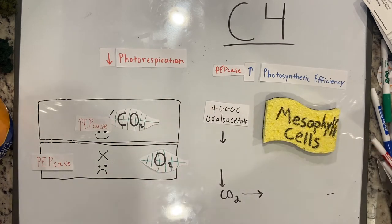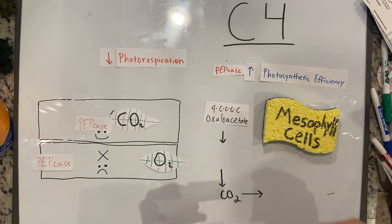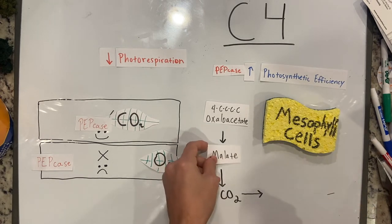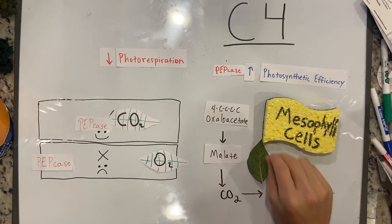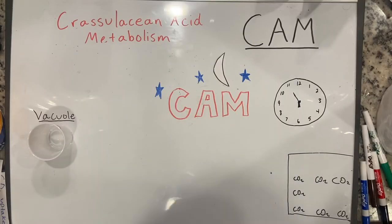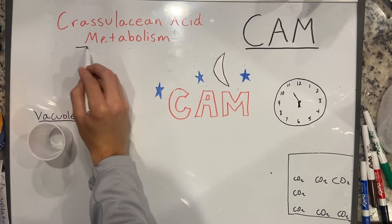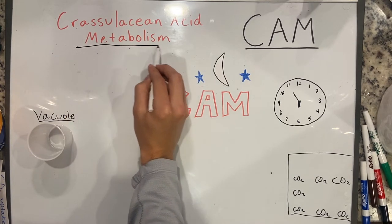Once the oxaloacetate is produced, it is then converted to malate and moved into the bundle sheath cells to be broken down into CO2 to undergo the Calvin cycle and the rest of photosynthesis. CAM plants are plants that use the Crassulacean acid metabolism pathway, or the CAM pathway.